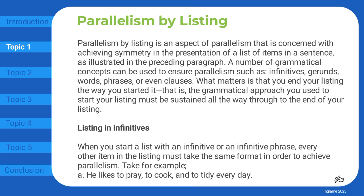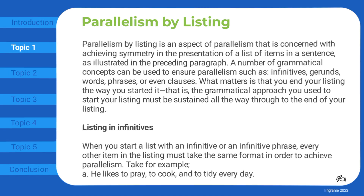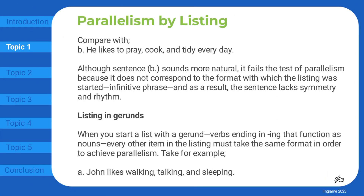Listing in infinitives. When you start a list with an infinitive or an infinitive phrase, every other item in the listing must take the same format in order to achieve parallelism. Take for example: he likes to pray, to cook, and to tidy every day. Compare with: he likes to pray, cook, and tidy every day. Although sentence B sounds more natural, it fails the test of parallelism because it does not correspond to the format with which the listing was started — infinitive phrase — and as a result, the sentence lacks symmetry and rhythm.